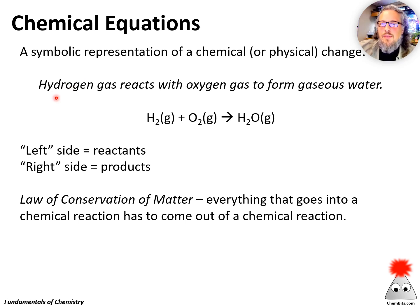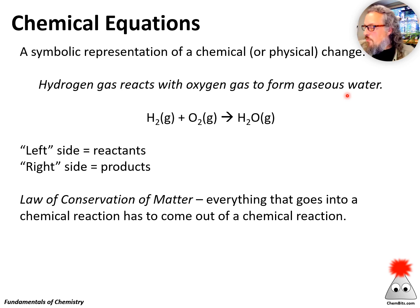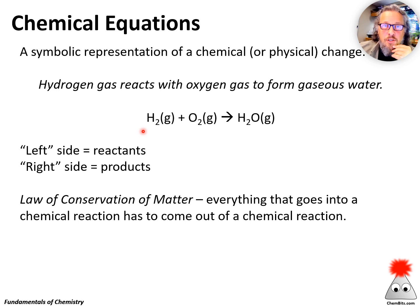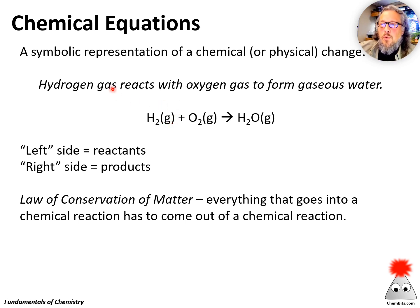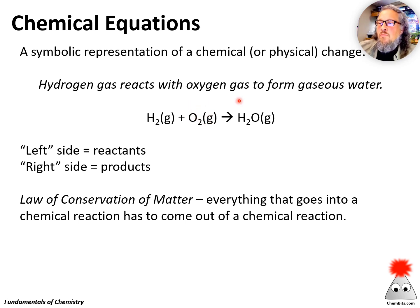If we've got the sentence in words: 'hydrogen gas reacts with oxygen gas to form gaseous water,' how do we symbolically translate that into a chemical equation? We have hydrogen gas — remember, hydrogen is one of those diatomic elements — H₂(g), reacts with plus oxygen gas, O₂(g), that's another one of our diatomics, to form gaseous water, H₂O(g).